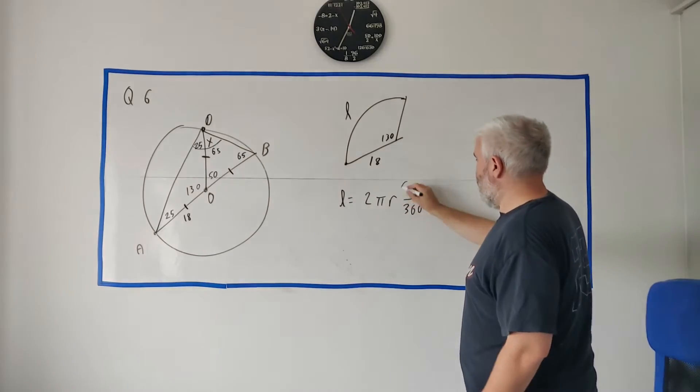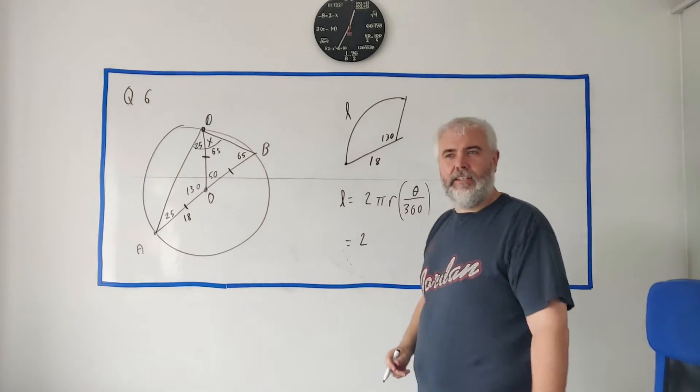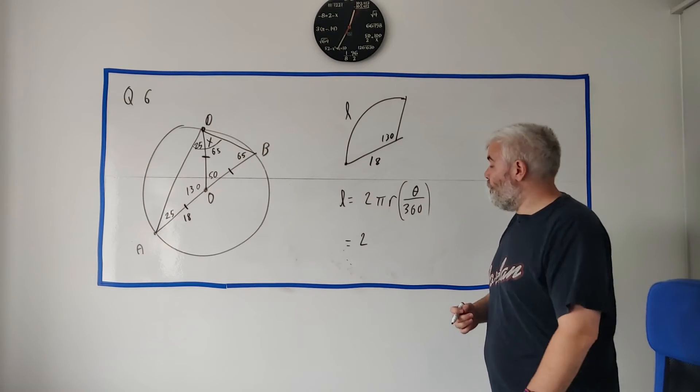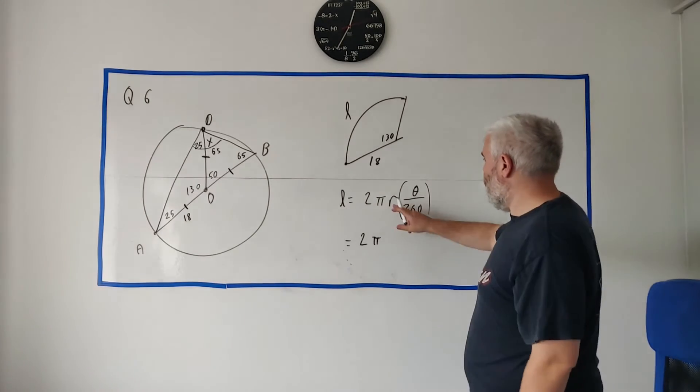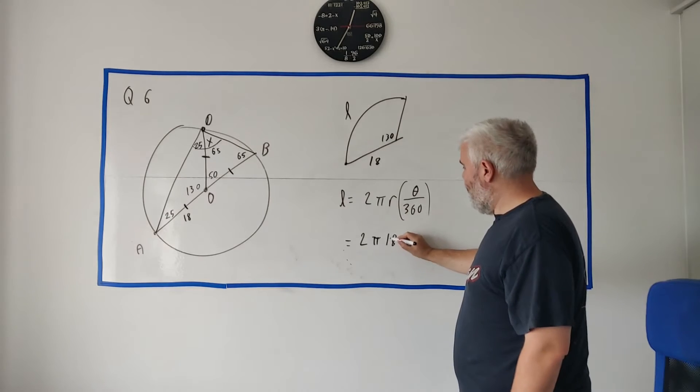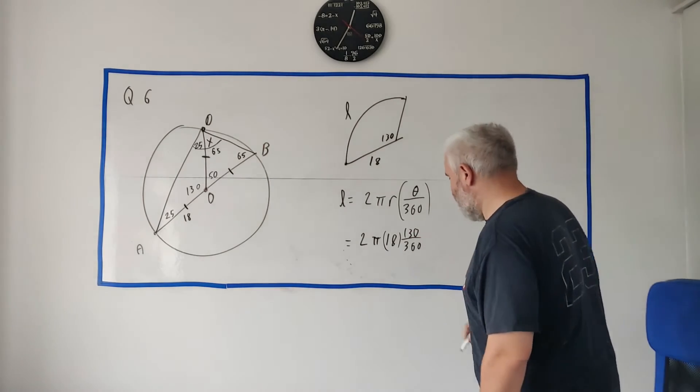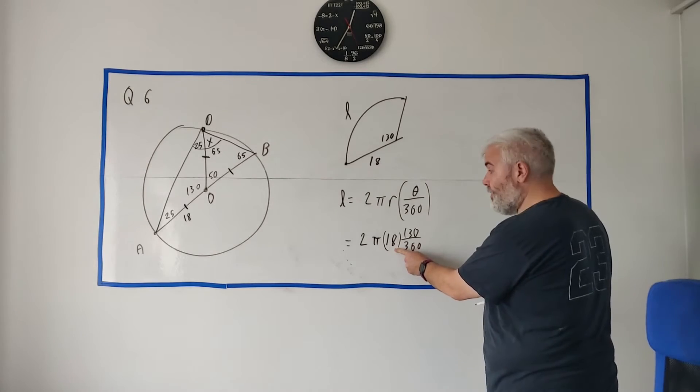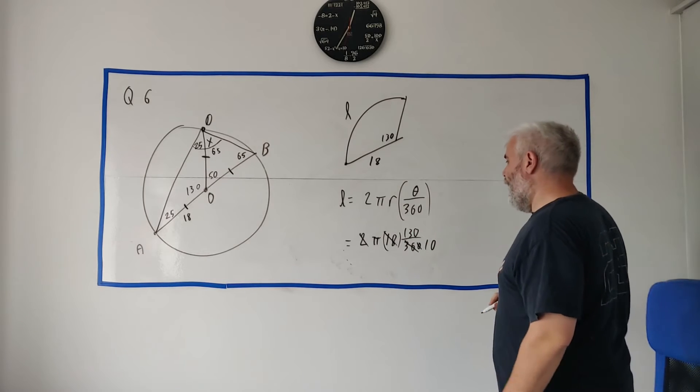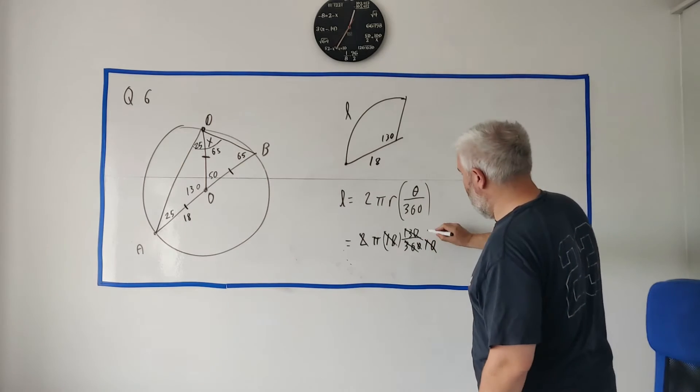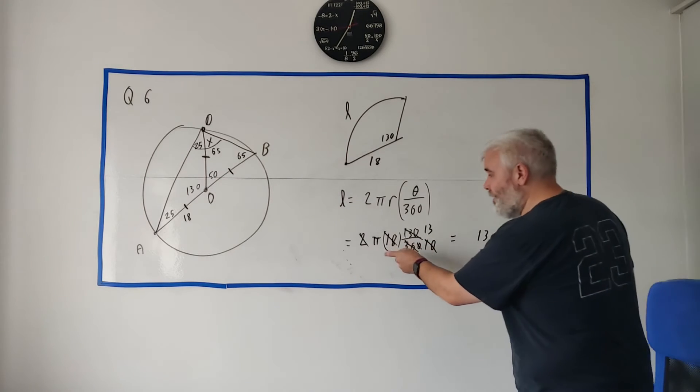So it says L is equal to 2πr times angle divided by 360. And we can go ahead and fill all these numbers in. That's 2, we leave π. They said in the question give your answer in terms of π, that just means leave π alone, just don't have to put in 3.14, just leave it alone. r is the radius, 18. And the angle we know, the angle is 130 divided by 360. Okay, 2 times 18 is 36. 36 divides into 360 ten times, and then 10 divides into 130 thirteen times.